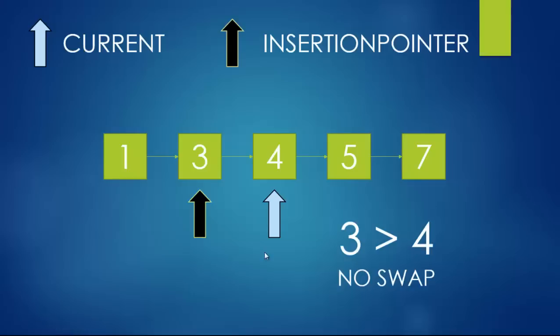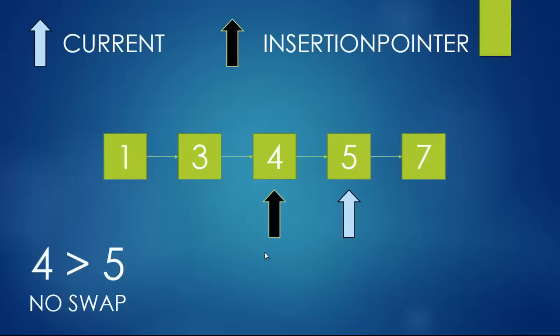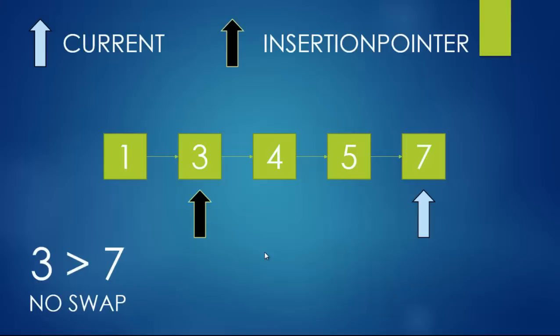After that swap, we check again: is three greater than four? It's not, so we increment the current pointer by one — moving to the next linked list memory location — and we reset the insertion pointer to point back to the head. Then we check: is one greater than five? It is not, so it moves to the next element. Is three greater than five? No. Is four greater than five? No. Then we move current to seven and reset the insertion pointer to the head, repeating the same process.